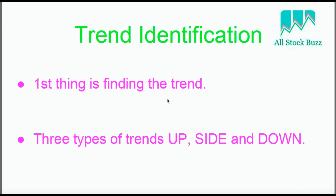Let's start with trend identification. There are three kinds of trends in technical analysis: uptrend, sideward trend, and downtrend. Rather than theoretical definitions, we want to understand practically how each trend looks in real charts.